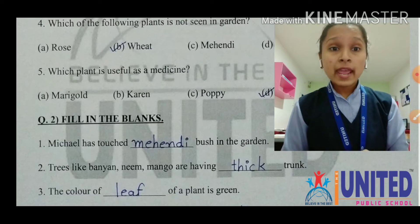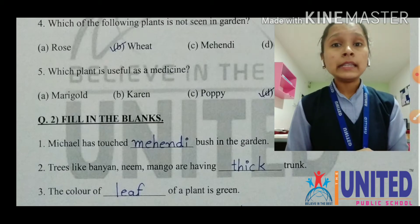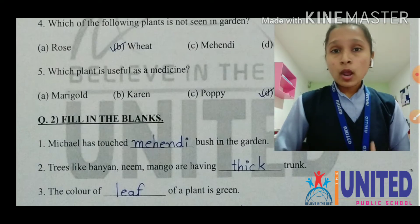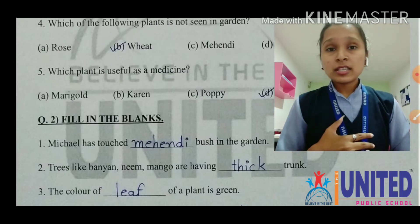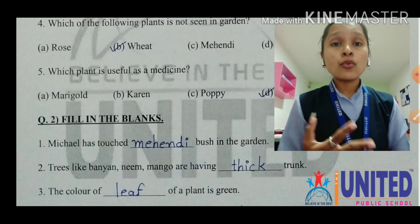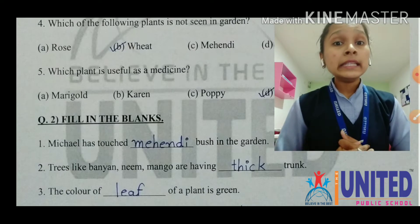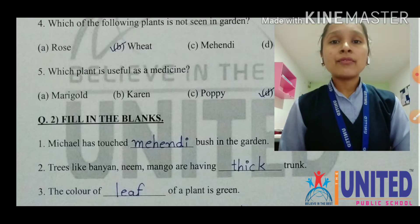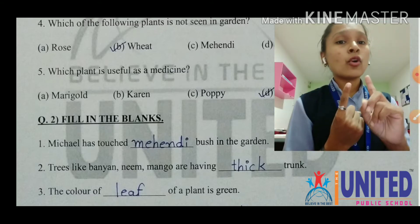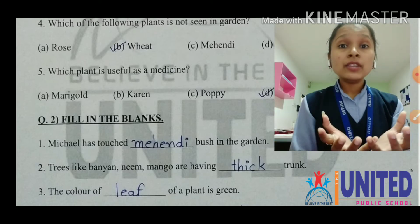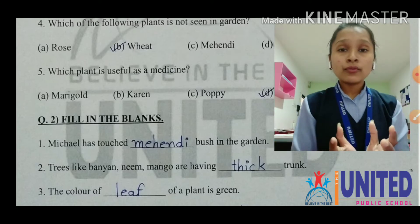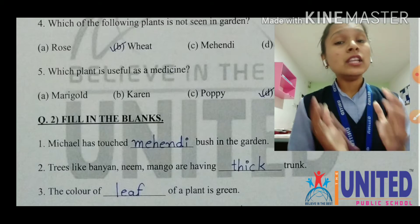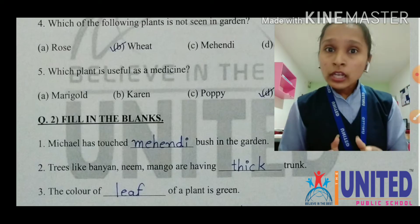Number three: the color of dash of a plant is green. Which part of a plant is green? Roots are brown, trunk is brown, branches are brown, flowers are colorful, fruits are different colors — but green color is of the leaf. L-E-A-F, leaf. If there is only one leaf we call it leaf, but if there are more, that would be called leaves. L-E-A-V-E-S. Leaves is the plural form of leaf.